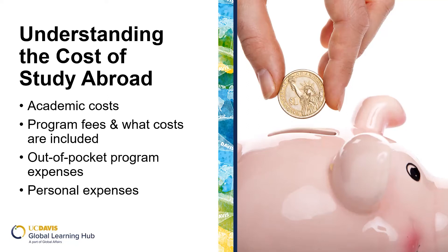The following costs are often associated with study abroad programming. As an academic program where students earn credit, there are academic costs associated with tuition and course and campus fees. Programs also have a program fee covering items included in the cost, which varies by program. For example, many UC Davis programs include housing, field trips, activities, and most meals, and internship programming includes placements and associated assistance. Out-of-pocket expenses are not included in the program fee but are a necessary part of participation, such as airfare, passport, books, visa, local transportation, and any meals or housing not covered. These are paid directly by the student and are estimated on the program cost page.